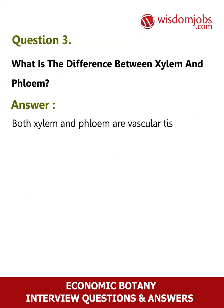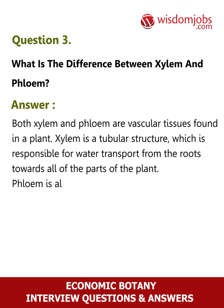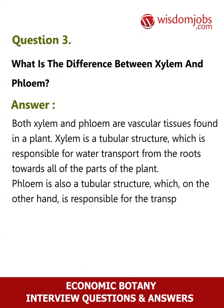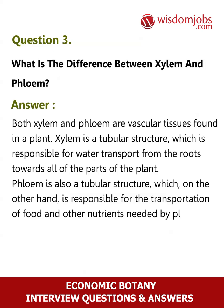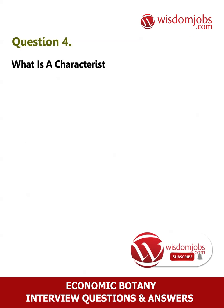Question 3: What is the difference between xylem and phloem? Answer: Both xylem and phloem are vascular tissues found in a plant. Xylem is a tubular structure responsible for water transport from the roots towards all parts of the plant. Phloem is also a tubular structure, which is responsible for the transportation of food and other nutrients needed by the plant.